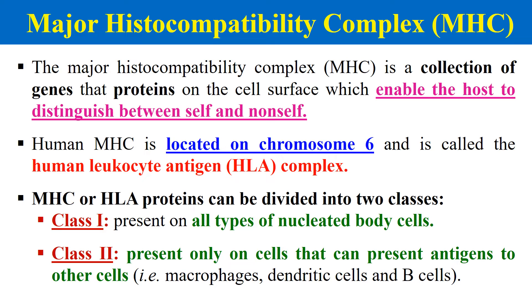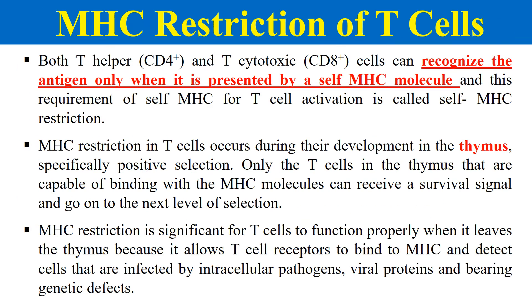Antigen presenting cells include macrophages, dendritic cells, etc. Now, the T-cells cannot recognize an antigen when it comes alone — it can only recognize the antigen when it comes in combination or in complex with MHC molecules. This restriction of T-cells, that it can only recognize antigen along with MHC, is known as MHC restriction.